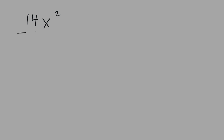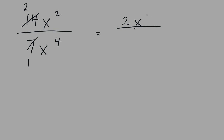14x to the power of 2 divided by 7x to the power of 4. 14 is divisible by 7: 14 divided by 7 is 2, and 7 divided by 7 is 1. So we have 2x squared over 1x to the power of 4. We have the variable x on top and bottom, so we subtract the exponents: x to the power of 2 gets cancelled out and 4 subtract 2 becomes 2. So we're left with 2 on top and x to the power of 2 on the bottom.